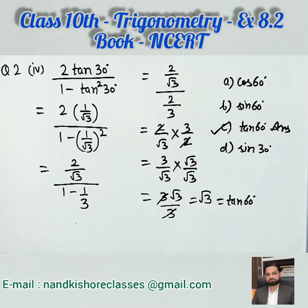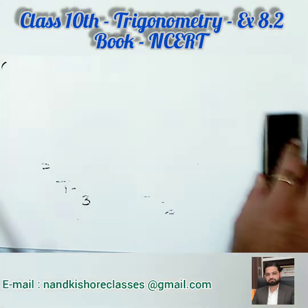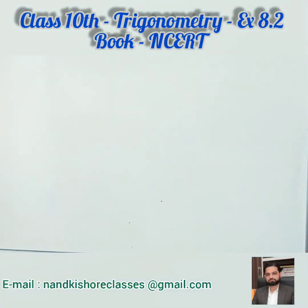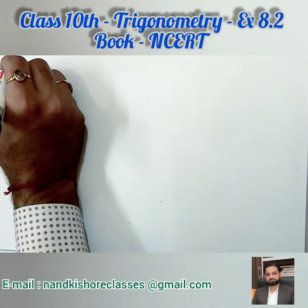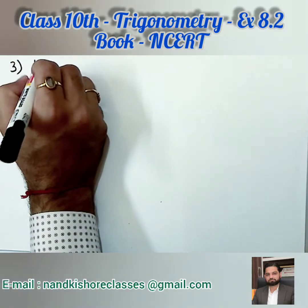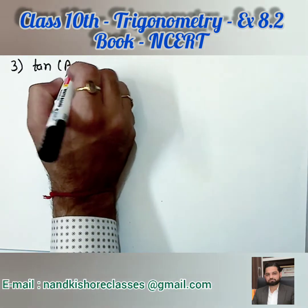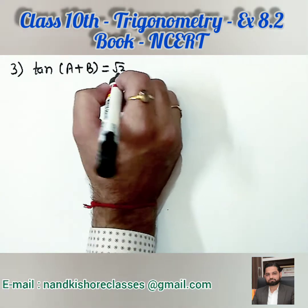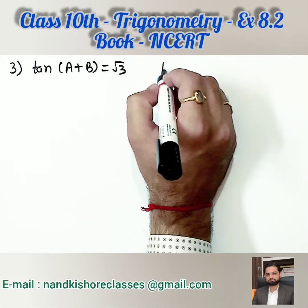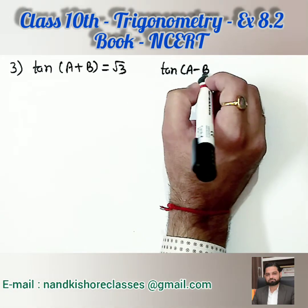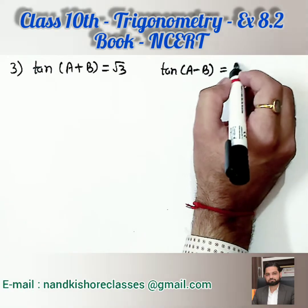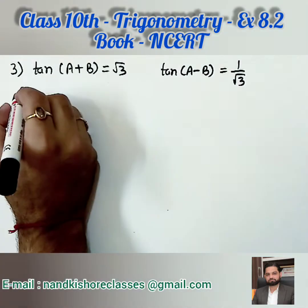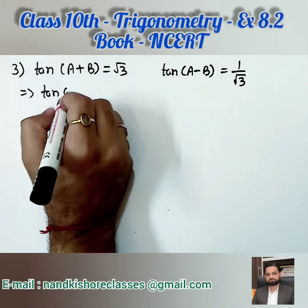Now we are going to start question number 3, the last question of the exercise. See the third question: tangent (A + B) = root 3 is given, and tangent (A minus B) = 1 by root 3 is also given. We need to find the values of A and B. This question is very easy. We want the right side expressed as a tangent value.